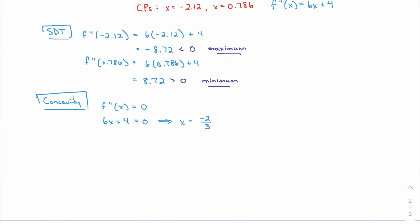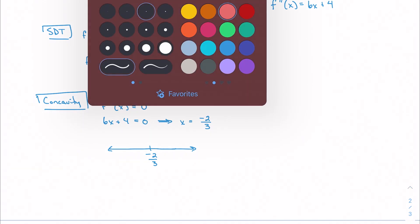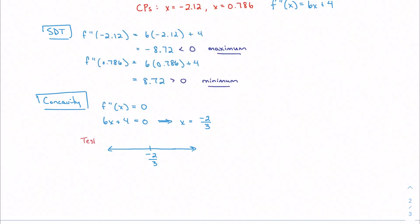So I'm going to make my sign chart at negative 2 thirds. I'm going to test a couple points around negative 2 thirds. And I'm going to determine the sign of f double prime. So we'll pick, I'll pick easy ones. I can do negative 1 and I can do 0. I'm going to get, let's see, I get negative 2 when I plug in negative 1, and I get positive 4 when I plug in 0.